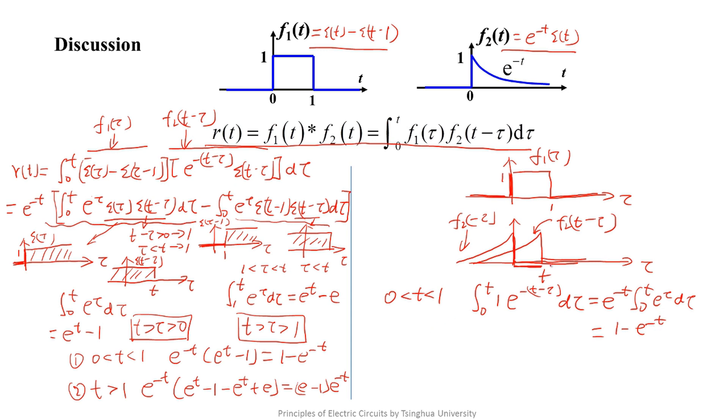Secondly, when t is greater than 1, from the graph of the function, we know that f1(tau) equals 0 when tau is greater than 1. So, the limits of the integral is from 0 to 1.